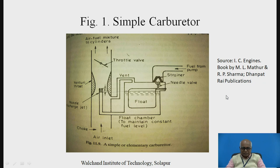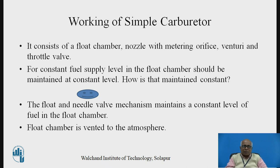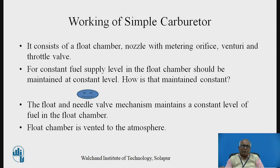Let us try to understand the working of this particular carburetor. It consists of a float chamber, nozzle with metering orifice, venturi, and throttle valve. For constant fuel supply, the level inside the float chamber should be maintained at a constant level. The float and needle valve mechanism maintains a constant level of fuel in the float chamber.